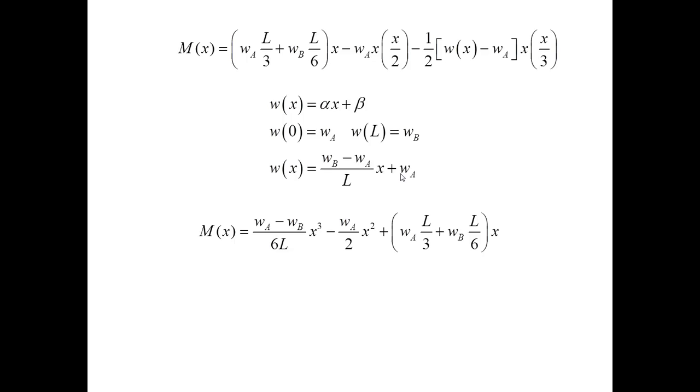This leads to the expression for M of X. Now, in terms of known parameters, WA, WB, and L. And finally, I can restrict this function to the values of WA equal to two W naught and WB equal to two W naught. That's the expression.